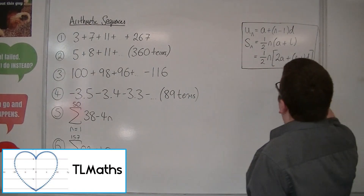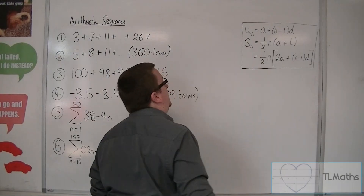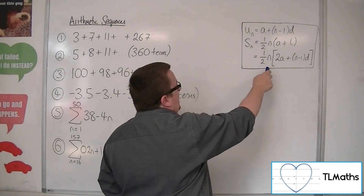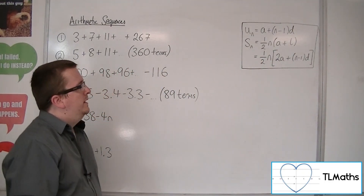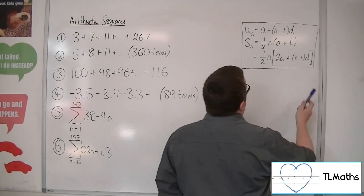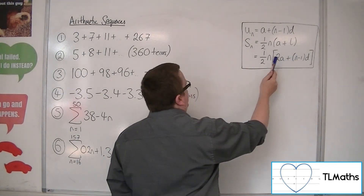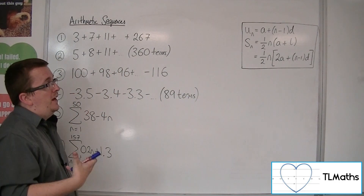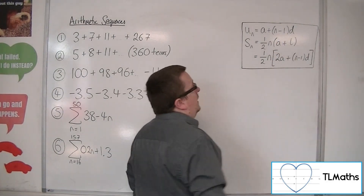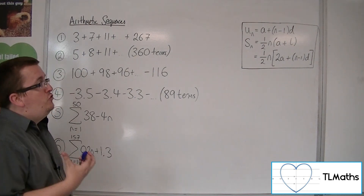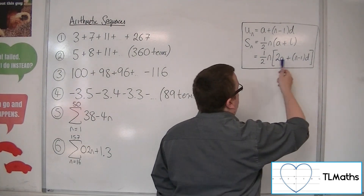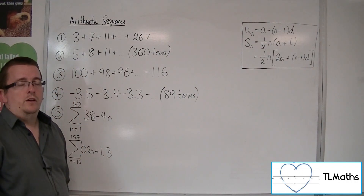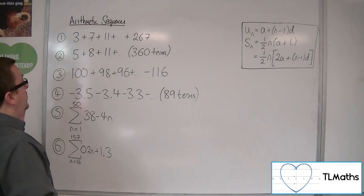We now have formulas for the sum to n terms. We've got two of them: S_n equals a half n times (a plus l), and S_n equals a half n times (2a plus (n minus 1)d). The reason we have two is because in some cases we'll know the last term, and in some cases we won't. If you know the last term, the first formula will be easier to use. But if you don't, and you just know the first term, the common difference, and how many terms there are, then the second formula will work.